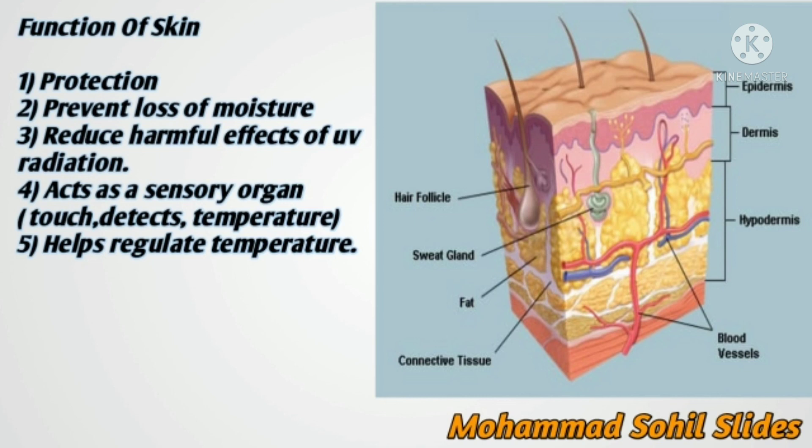Another function is thermoregulation. The skin plays an important role in thermoregulation by two ways: by liberating sweat at the surface, and by adjusting blood flow in the dermis. In response to high environmental temperature or heat produced during exercise, the skin helps to lower body temperature. Blood vessels in the dermis dilate, producing more blood flow through the dermis and increased heat loss from the body.